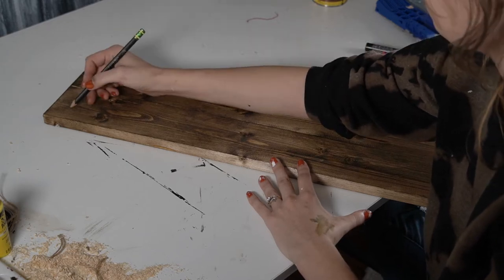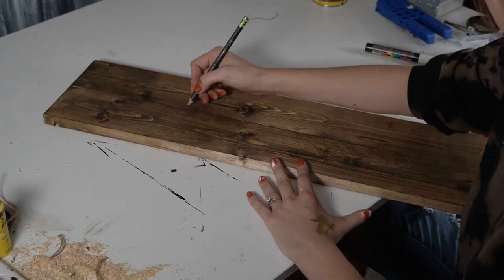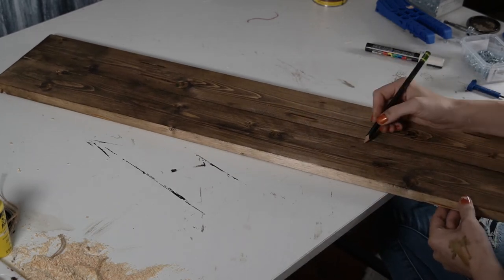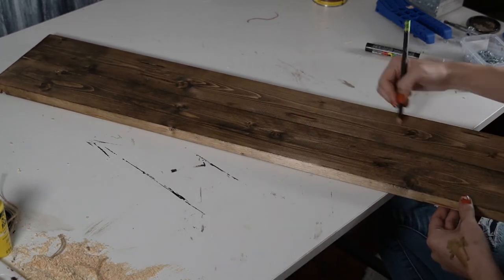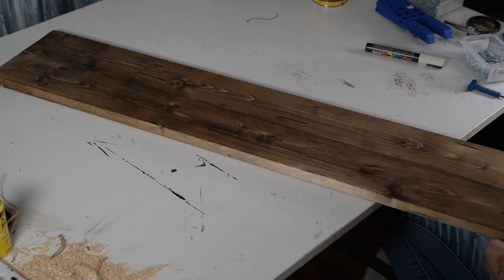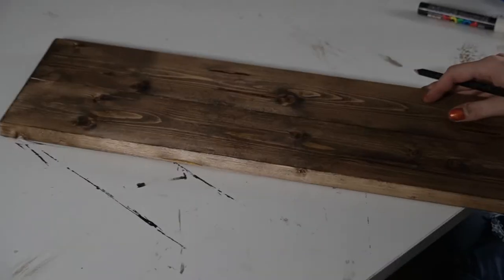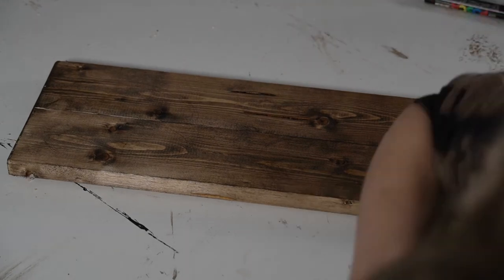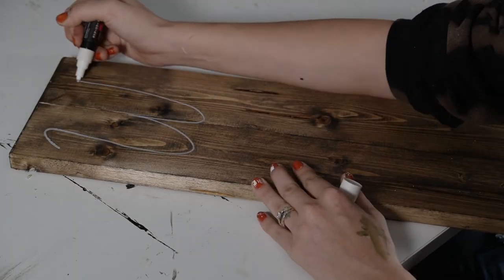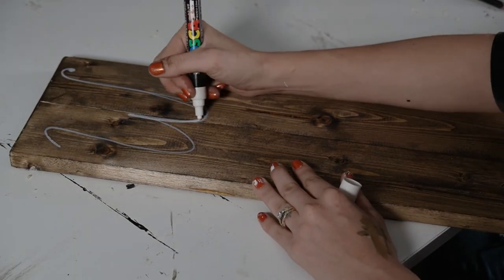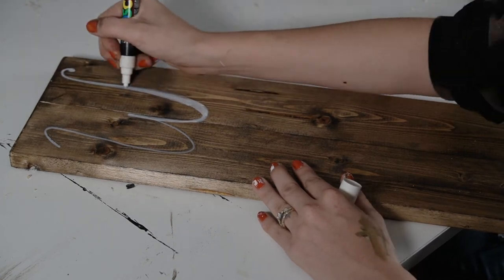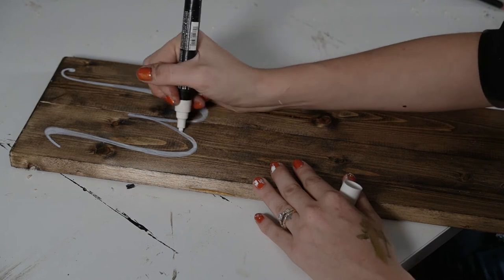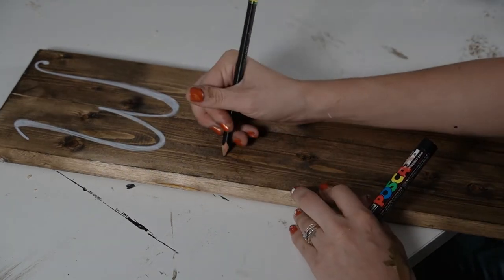I then let that sit for a while and I went and worked on my other DIYs that you haven't seen yet, unless you keep watching my video, so you should definitely do that. But then I came back to this guy and the stain was all dry. So using my pencil, I drew out, or drew out, wrote out, yeah I wrote out the word 'welcome' down this plank.